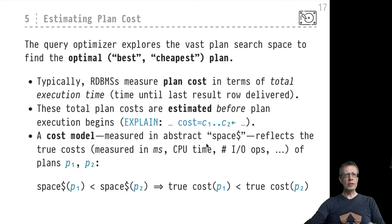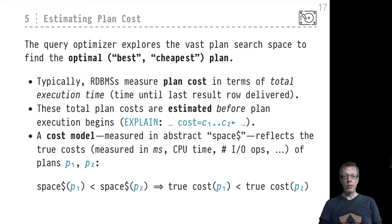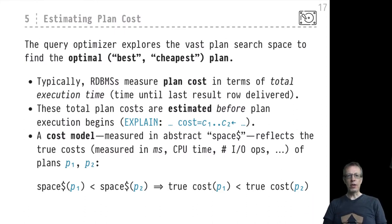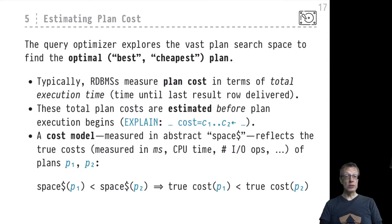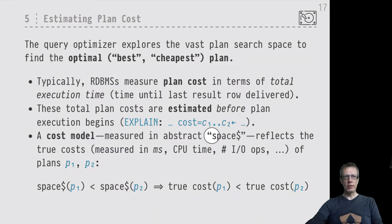What we will discuss in the upcoming videos is a cost model — an abstract model of the true cost the system faces when evaluating a plan. We won't be able to assess true cost measured in milliseconds; there are just too many system configuration parameters and influences on plan execution time. It would be hopeless and probably useless to precisely model plan execution time in milliseconds or nanoseconds. We use an abstract cost model that measures plan cost in some abstract currency — let's call it 'space dollar'.